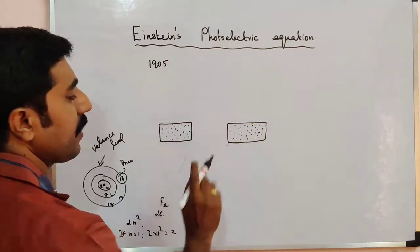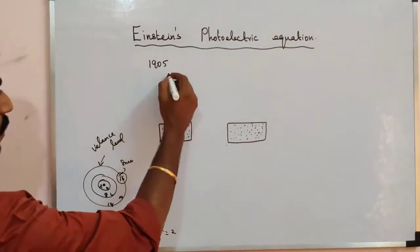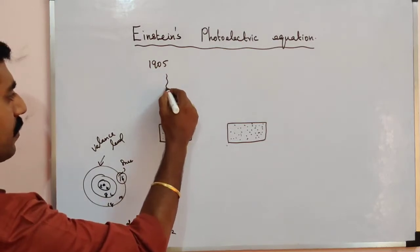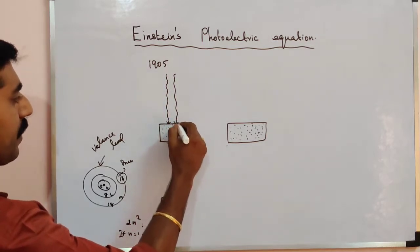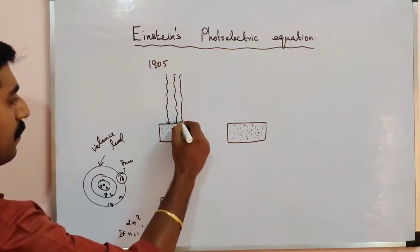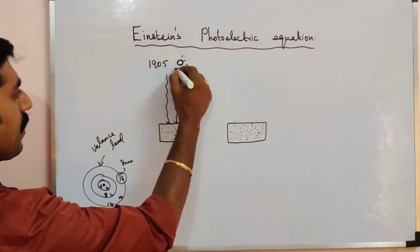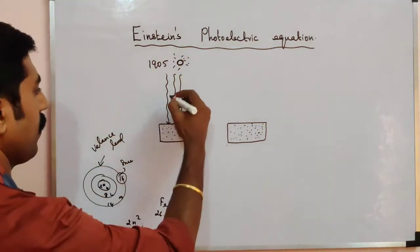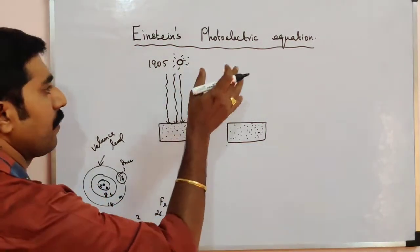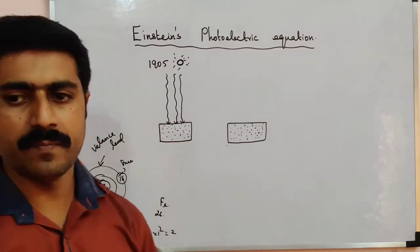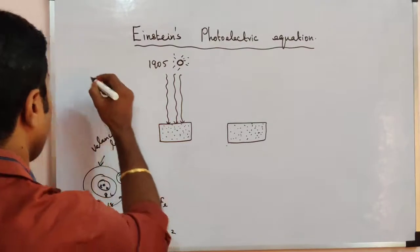Firstly, we need to increase the energy of the free electrons. For that, we allow radiation to fall on the surface. The radiation comes from the sun or from any light source, which emits light in all possible directions. Radiation has a dual nature.